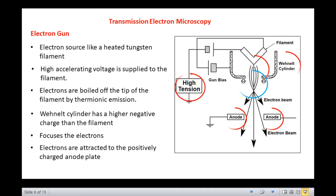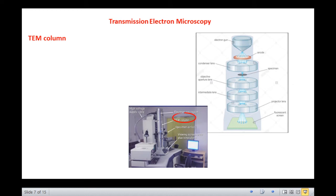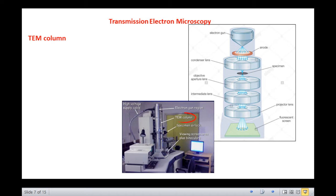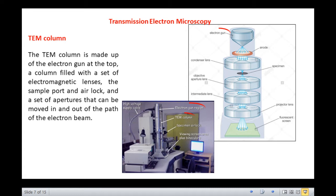Let us now talk about the TEM column. The TEM column stands vertically as you can see here and is made up of the electron gun at the top, a column filled with a set of electromagnetic lenses like the condenser lenses, objective lenses, and projector lenses, the specimen port and airlock, and a set of apertures that can be moved in and out of the path of the electron beam.